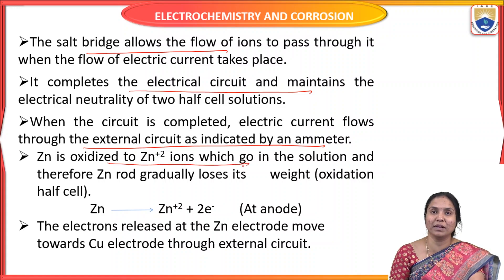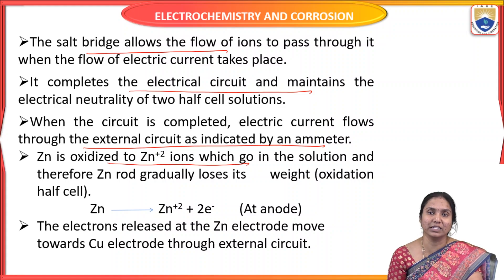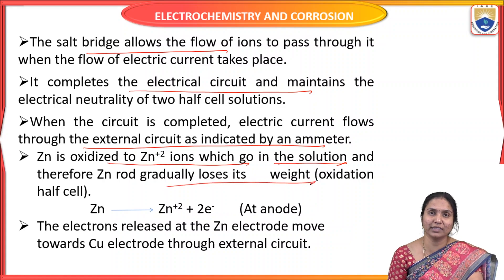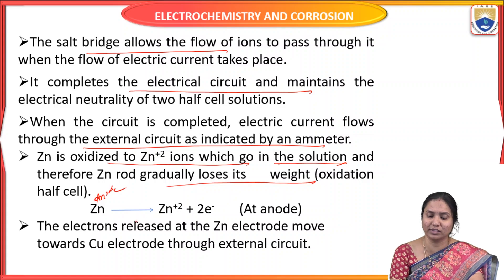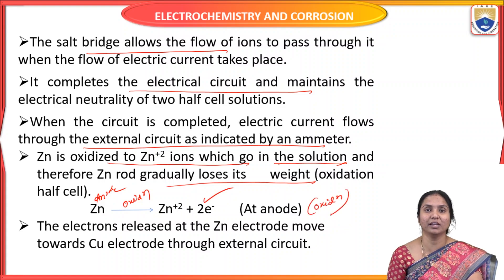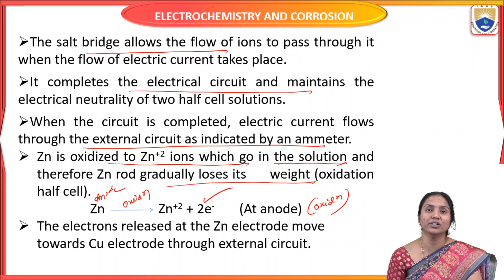Zinc acts as the anode; at the anodic area, oxidation takes place. Oxidation means loss of electrons. Zinc is oxidized to give Zn²⁺ ions which go into the solution, and therefore zinc gradually loses its weight. In this Daniel cell, zinc undergoes oxidation, giving zinc metal ions and losing two electrons at the anodic area.